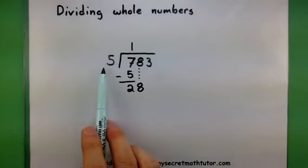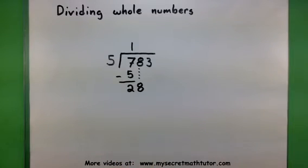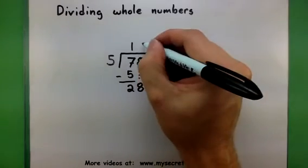Now we think to ourselves, 5 goes into 28 how many times? Well, I know 5 times 5 is 25, and that's pretty good. And 5 times 6 is 30, and that's too big. So we're going to use 5 times 5.